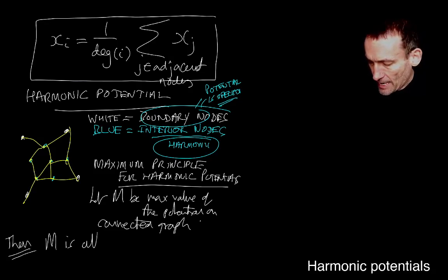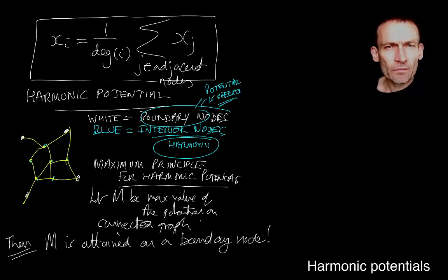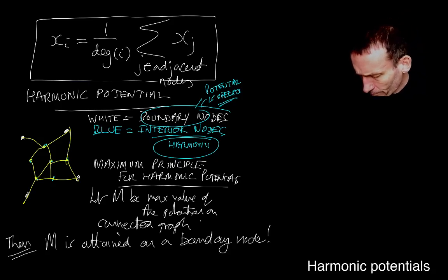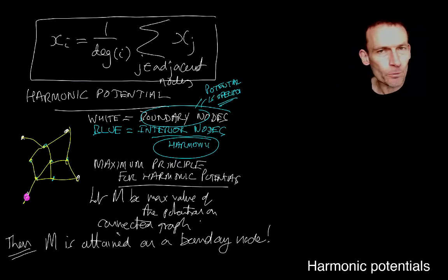The result is then M is attained on a boundary node. It might be attained on all the boundary nodes, but it's definitely attained on the boundary, on a boundary node. Let's, it's easy to prove because let's use pink to denote type of node. Now look, if I actually let M be attained at a white node, then it's a boundary node, and I'm done. There's nothing to prove. So let's not worry about that particular case. The key problem here in establishing this maximum principle is to suppose I start here and suppose that the maximum is attained at an interior node.